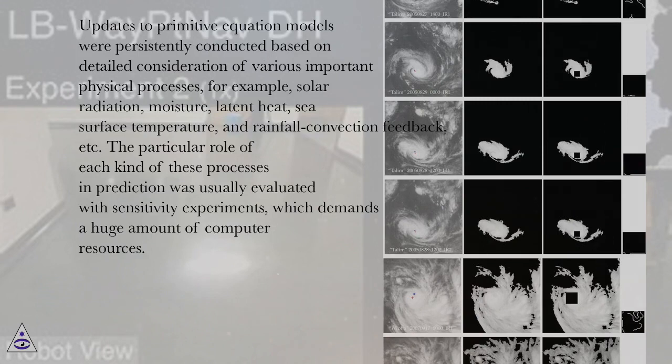Updates to primitive equation models were persistently conducted based on detailed consideration of various important physical processes, for example, solar radiation, moisture, latent heat, sea surface temperature, and rainfall convection feedback, etc. The particular role of each kind of these processes in prediction was usually evaluated with sensitivity experiments, which demands a huge amount of computer resources.